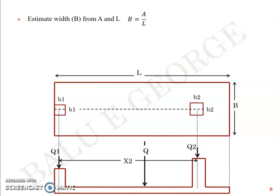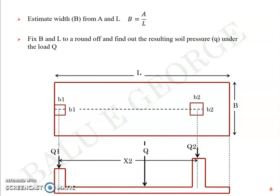Round off figures as needed — for example, if the calculated length is 10.7 m, provide 11 m, and similarly round off breadth B. Multiply the rounded B and L to get the area provided. Finally, make a check that total load Q divided by area provided is less than or equal to the safe bearing capacity, ensuring the load is safely transferred to the soil without bearing capacity failure.